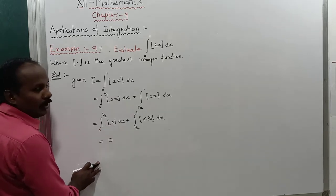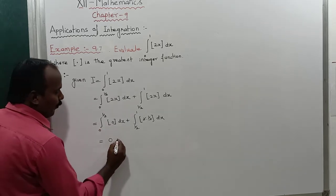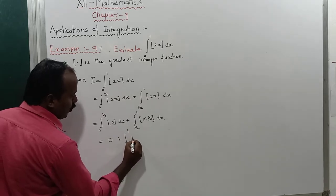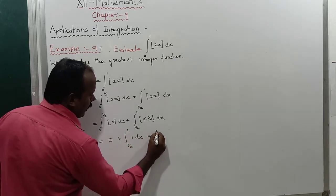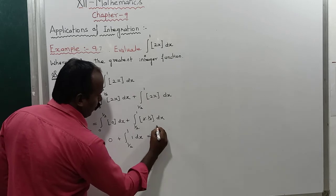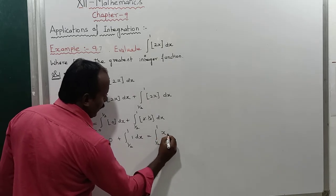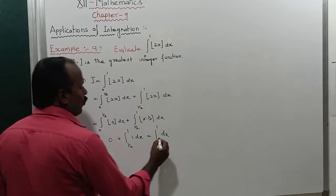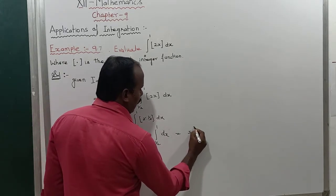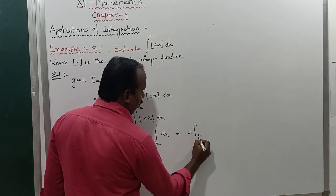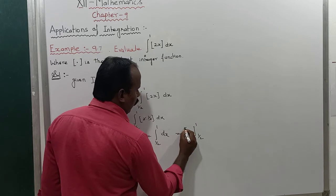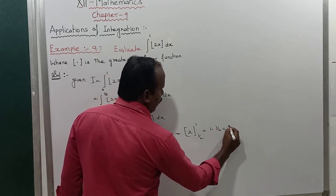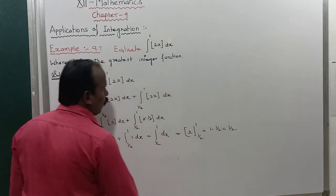The first integration goes to 0 because the function value is 0. For the second part: ∫_(1/2)^1 1 · dx = [x]_(1/2)^1. The integration of dx is just x. Applying limits: upper limit 1 minus lower limit 1/2 gives the answer 1/2.